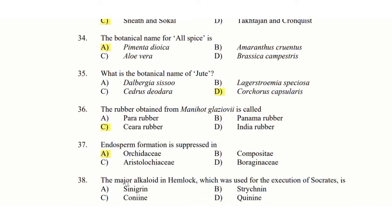38th question: The major alkaloid in Hemlock, which was used for the execution of Socrates — option A: cinchonine, option B: strychnine, option C: conine, option D: quinine. The answer is option C: conine.